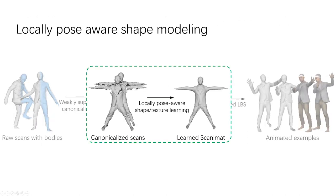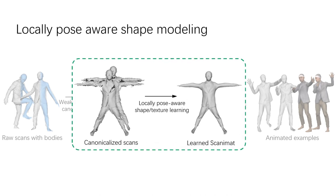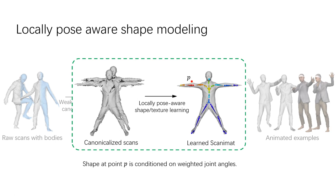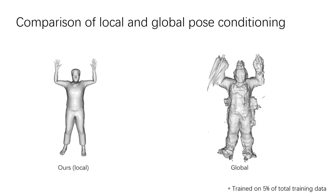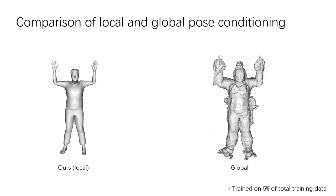We model clothed human shapes with pose-dependent deformations from canonicalized scans. To deal with missing regions and arbitrary clothing topology, we exploit an implicit surface representation. In addition, we propose a local pose embedding framework based on the previously learned skinning weights. This allows us to localize the influence of each body part to clothing deformations and to learn pose correctives that lead to better generalization to unseen poses by preventing spurious correlations.